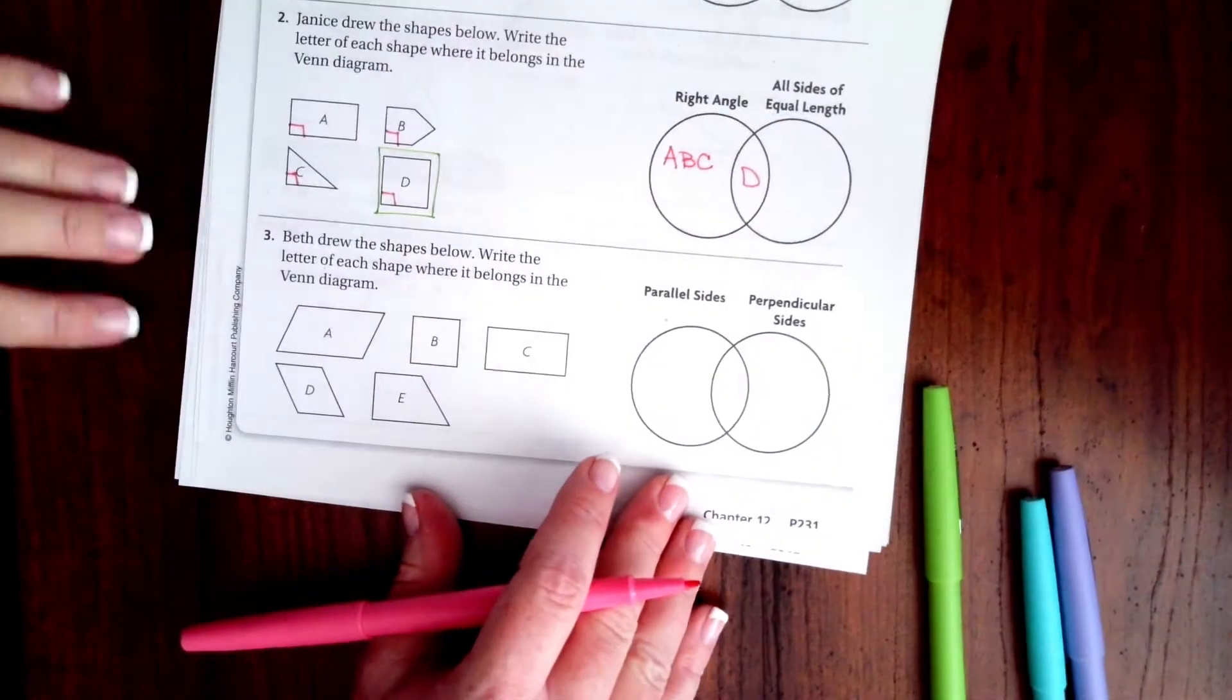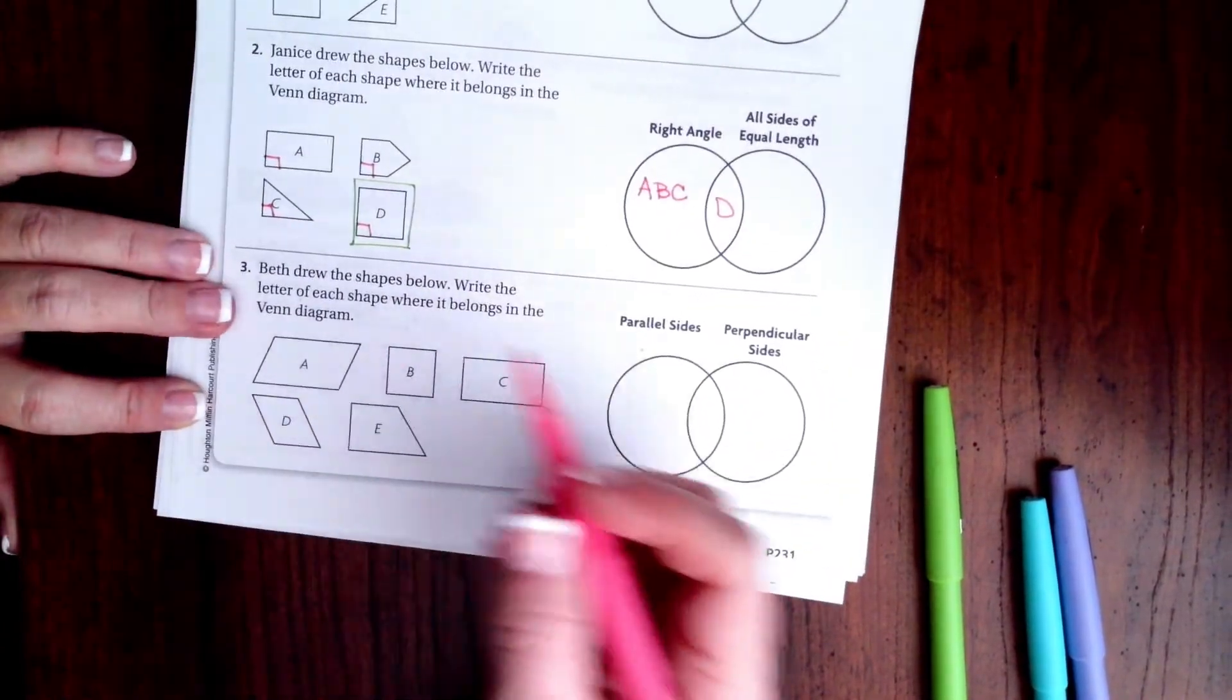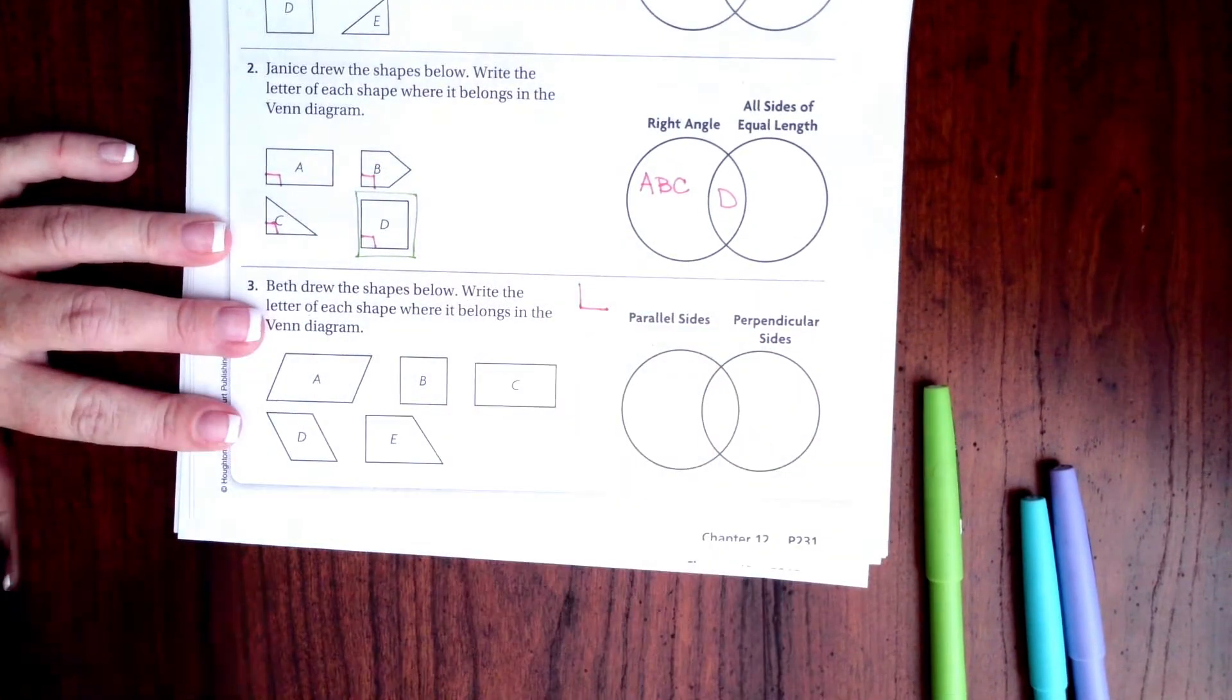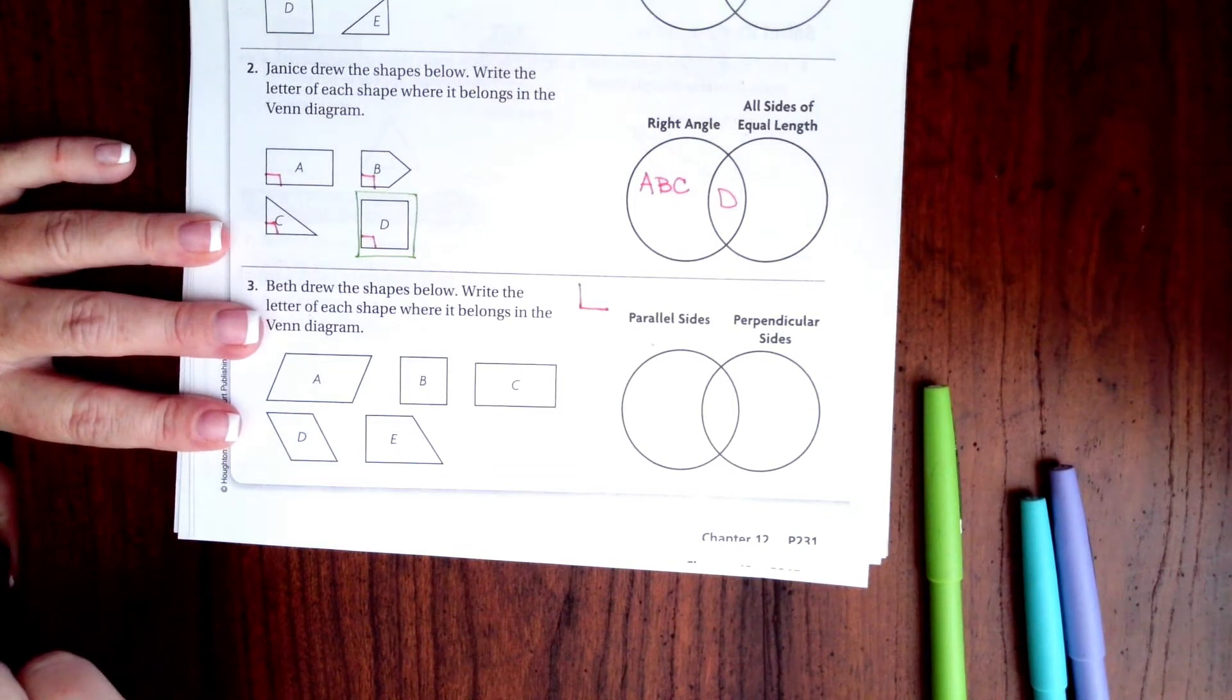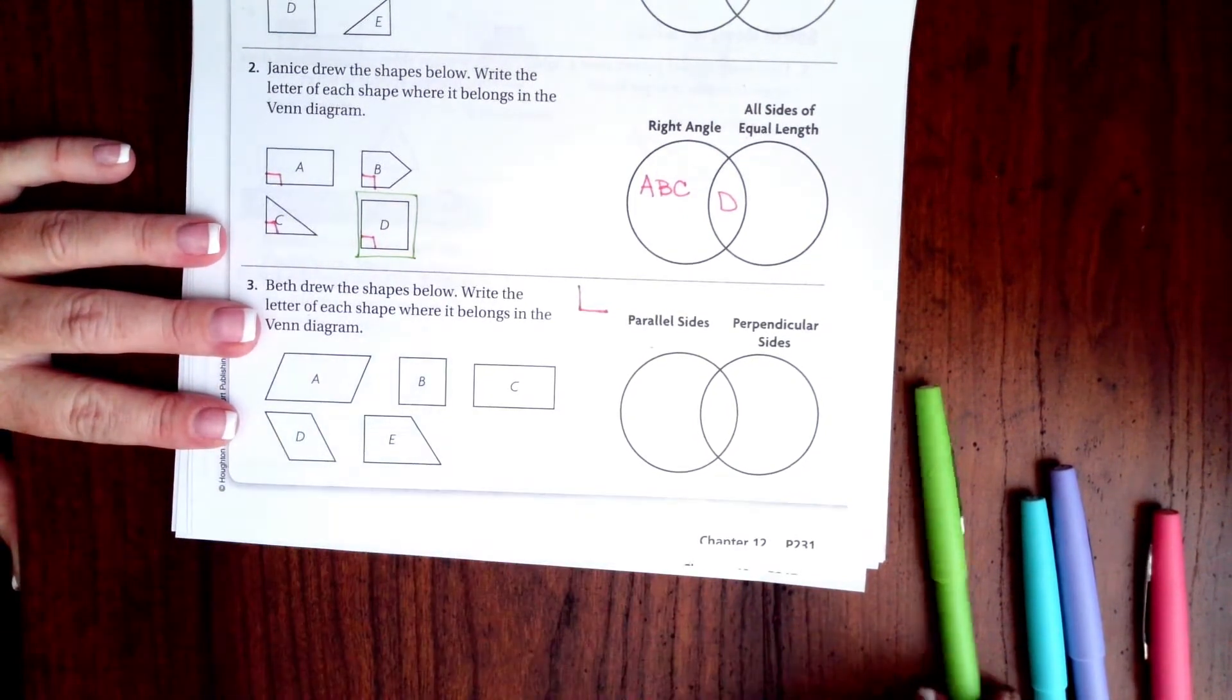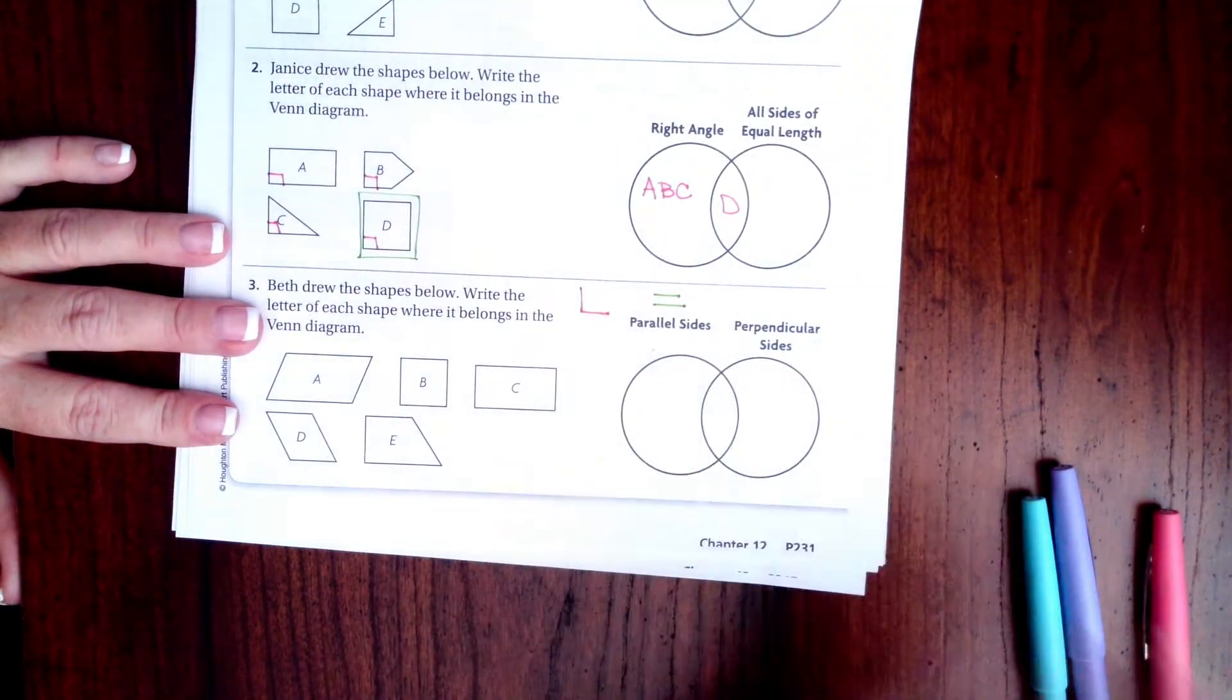I'm going to let you guys decide on this one. We need ones with parallel sides and one with perpendicular sides. Remember that perpendicular means they meet at a 90-degree angle. Parallel sides run and never touch.